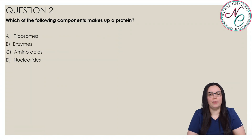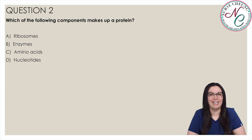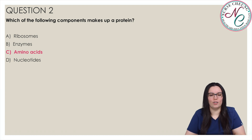Question 2: Which of the following components makes up a protein? Is it A) Ribosomes, B) Enzymes, C) Amino Acids, or D) Nucleotides? The correct answer is C) Amino Acids. Proteins are long chains of amino acid monomers.